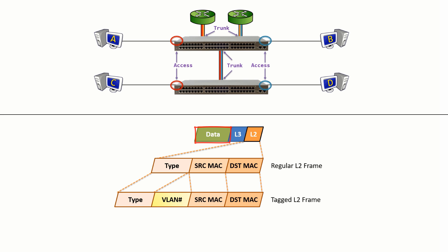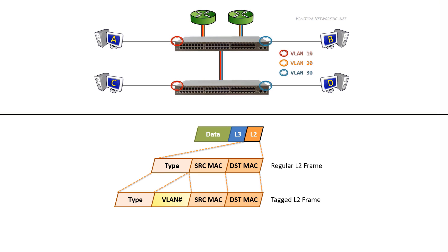Each packet has its data payload, then a layer 3 header, then a layer 2 header. Inside the layer 2 header is where the source and destination MAC addresses appear, which indicate who is talking to who. When a packet traverses a trunk port, an extra piece of information is added inside the layer 2 header which indicates what VLAN that traffic belongs to — that is the VLAN tag. When this switch sends traffic on a trunk port, it marks all the frames with a VLAN tag so the other switch knows which VLAN that traffic belongs to. Notice that every time a packet is crossing a trunk port, a VLAN tag is added to tell the receiving switch what VLAN that traffic belongs to.